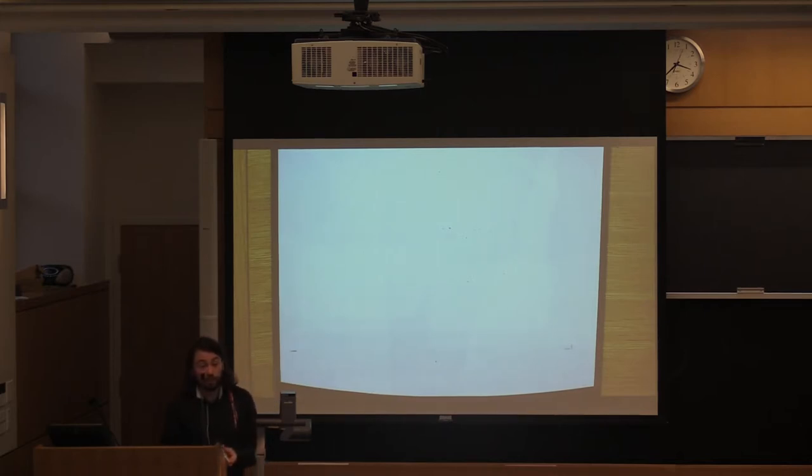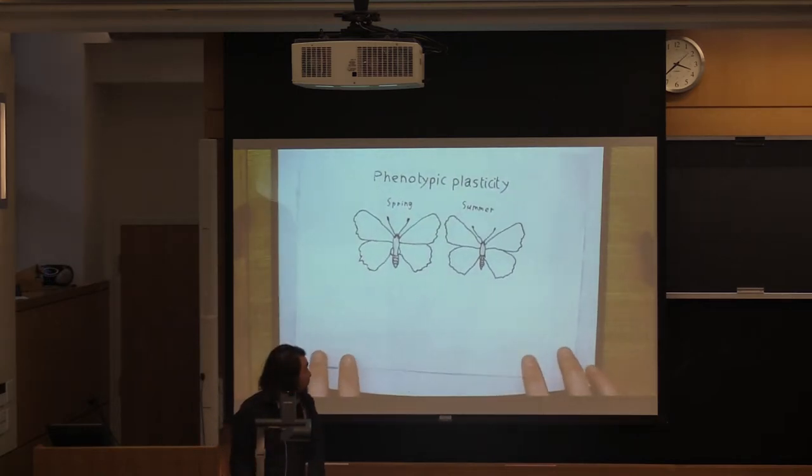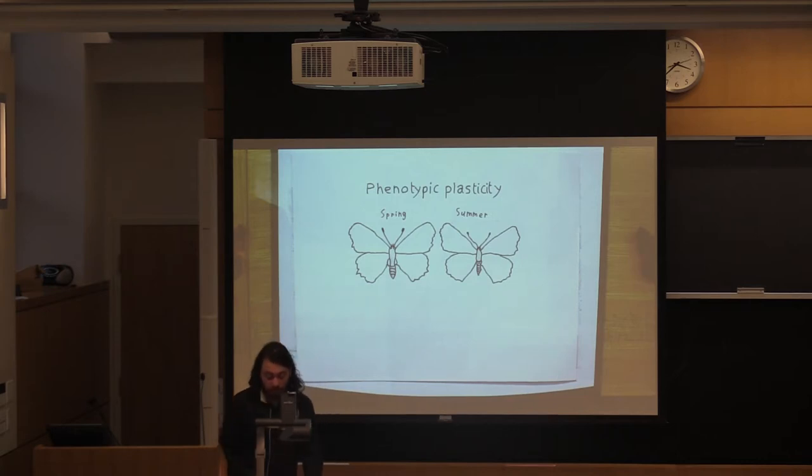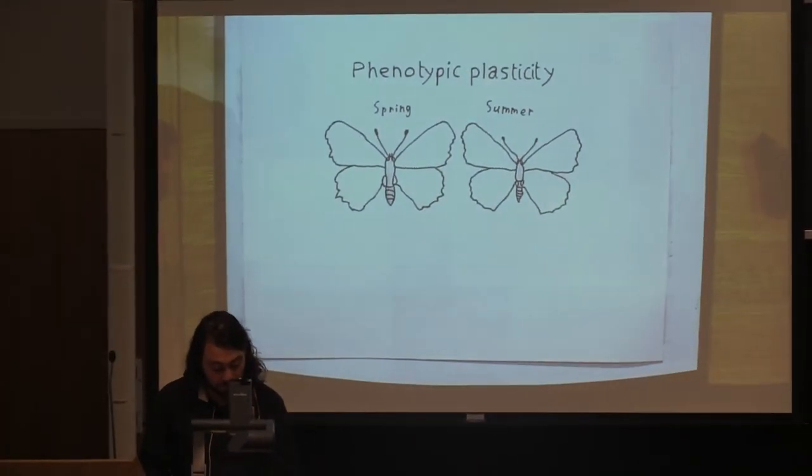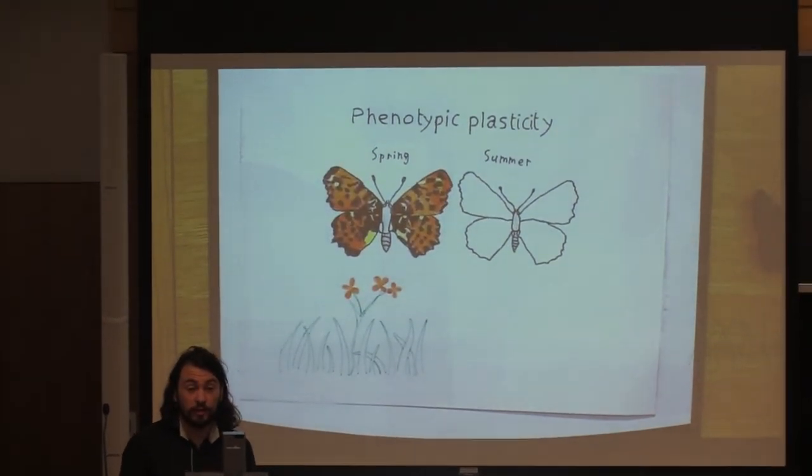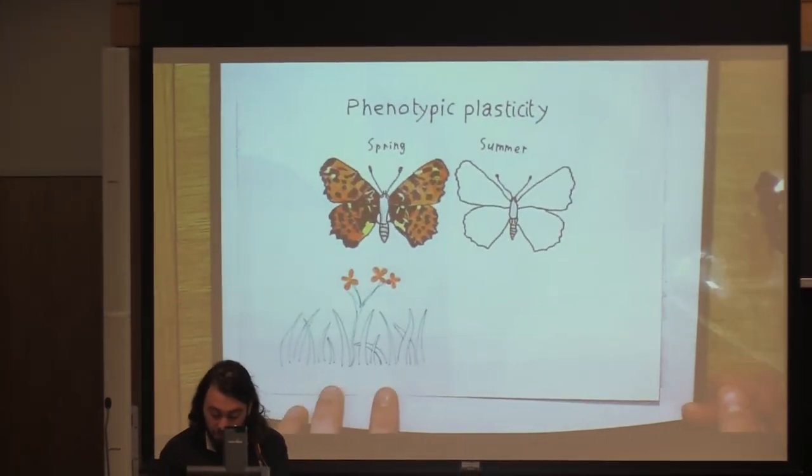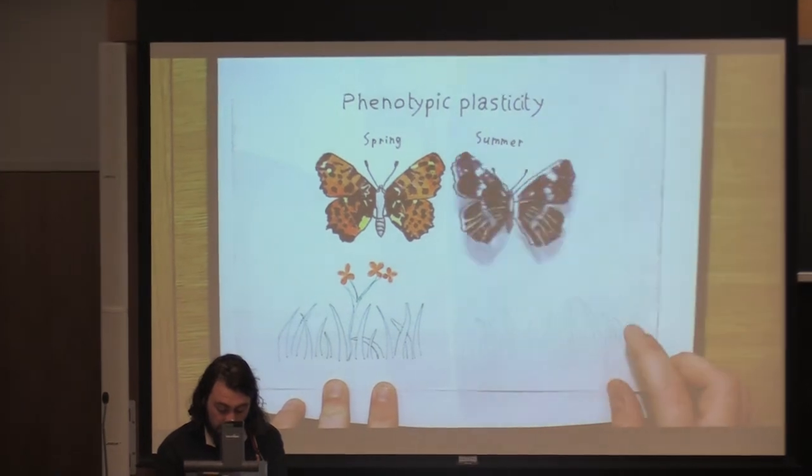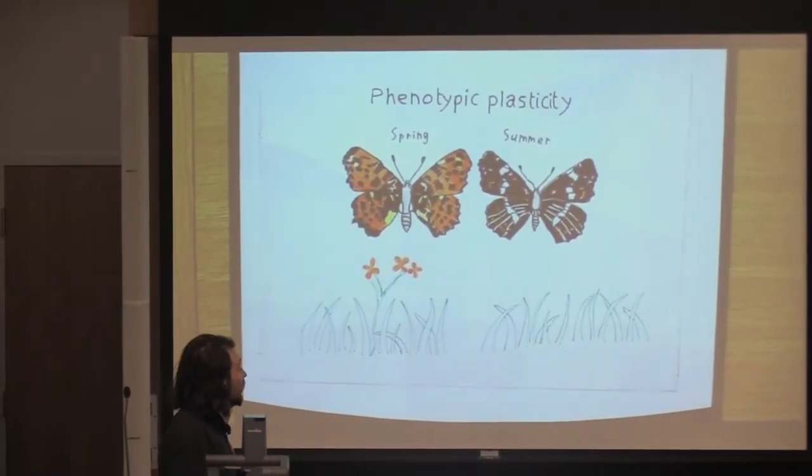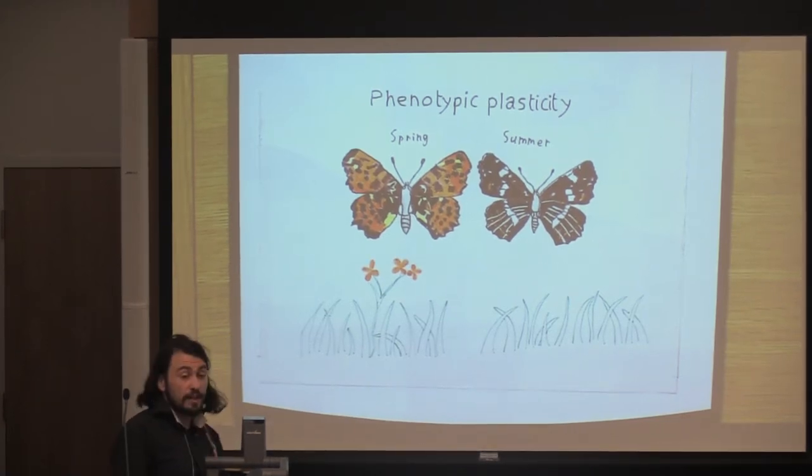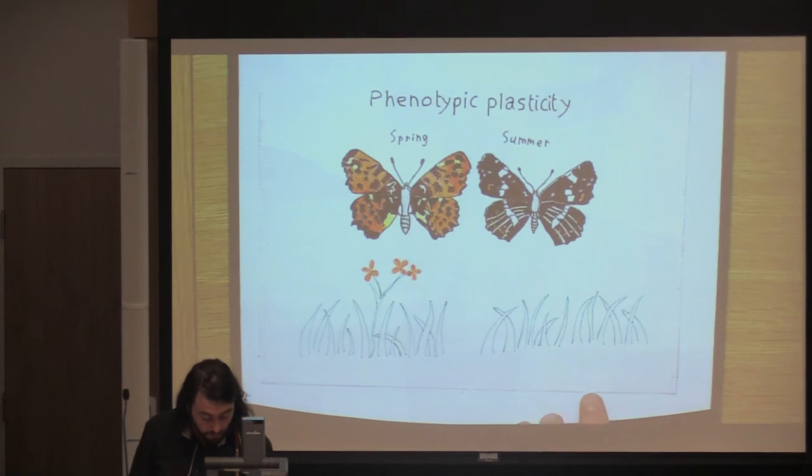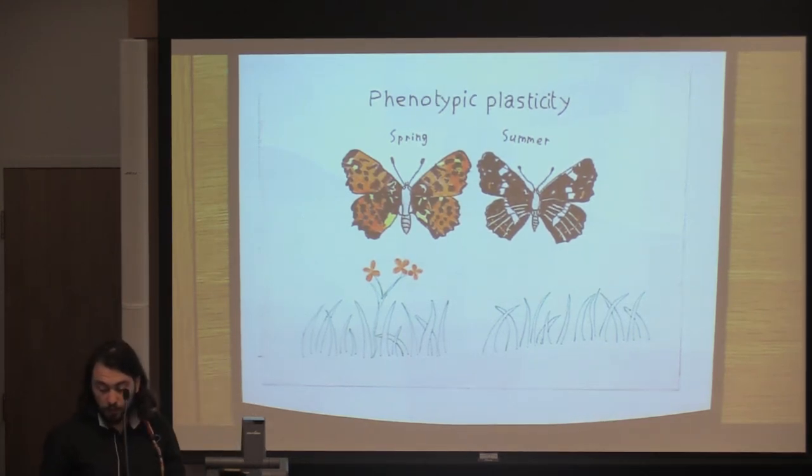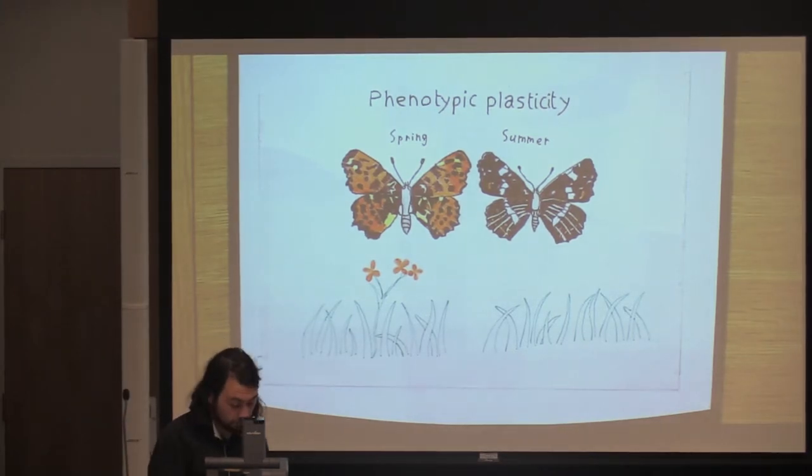Many of you probably already wondered what is phenotypic plasticity. So the best example I found is that butterfly that in the spring, when it emerges from its chrysalis, will display a beautiful orange phenotype. And in the summer, the same butterfly species, when it emerges from its chrysalis, will have a brown, darkish pattern of colors. So that is phenotypic plasticity: the ability of the same species with the same genotype to express multiple phenotypes in different environments.